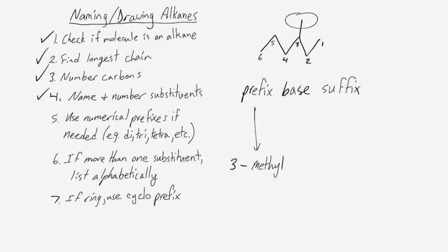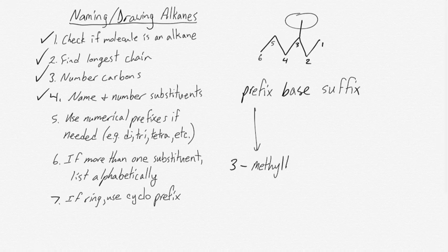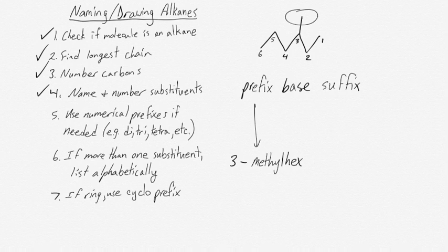There is only one substituent, so we don't need to look at checklist steps five or six, and it's not a ring so we can ignore seven. Our base is still the same as the last example — six carbons, so it's 'hex'. Our suffix is still '-ane' because we have an alkane. So the final name is 3-methylhexane.